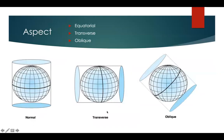How the developable surface goes around the globe is called aspect. The surface can go around the equator, which is called normal aspect or equatorial aspect. It can follow the meridians, which means it is transverse.